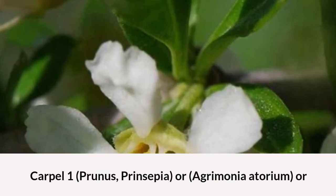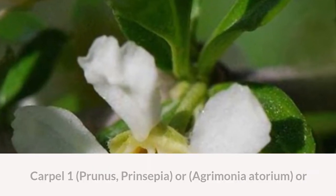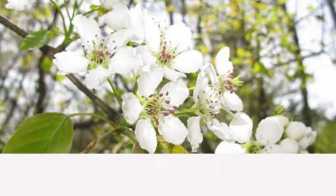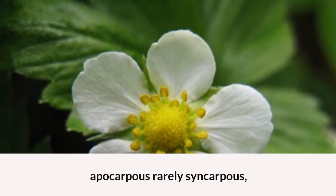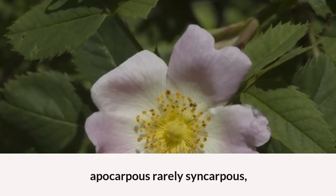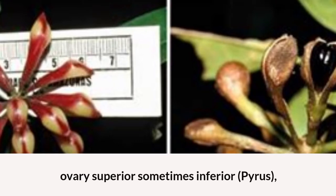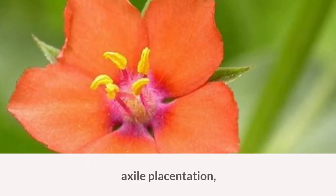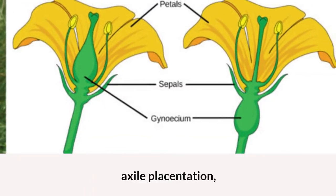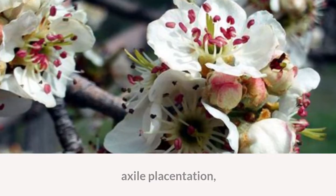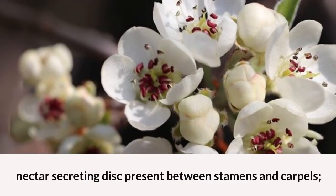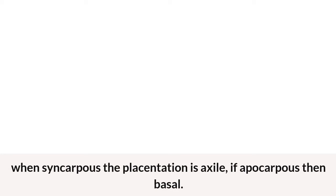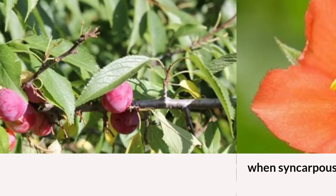Carpels: one (Prunus, Prinsepia, Agrimonia), or five (Pyrus), or indefinite (Fragaria and Rosa); apocarpous or rarely syncarpous. Ovary superior, sometimes inferior (Pyrus); axile placentation; nectar-secreting disc present between stamens and carpels. When syncarpous, placentation is axile; if apocarpous, then basal.